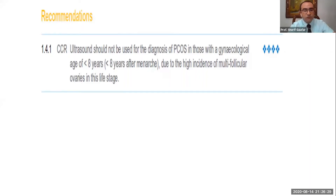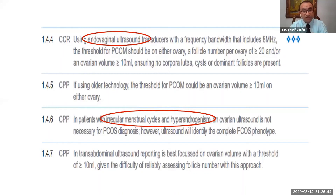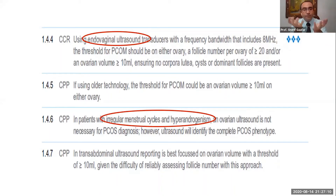Most clinicians will get patients aged 14, 15, or 16 years old, asking them to come with a full bladder to do an ultrasound — and this ultrasound is actually useless as a criterion for diagnosing PCOS. So as stated: endovaginal ultrasound requires more than 20 follicles, and if you depend on abdominal ultrasound, you will use ovarian volume. If you have regular menstruation and hyperandrogenism, you don't need an ultrasound to reach the diagnosis of PCOS — you already have two important criteria and don't need the third.